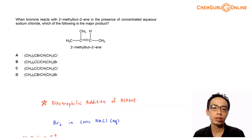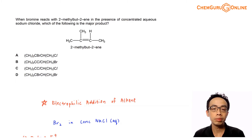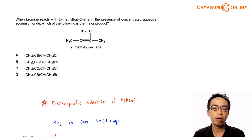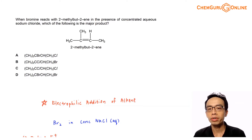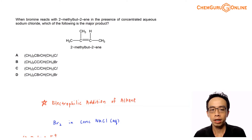Hi everyone, this is Maverick Poirot, the chemistry guru. In today's video, we want to learn how to determine the major product for the bromination of an alkene in the presence of concentrated aqueous sodium chloride. So let's take a look at this exercise.